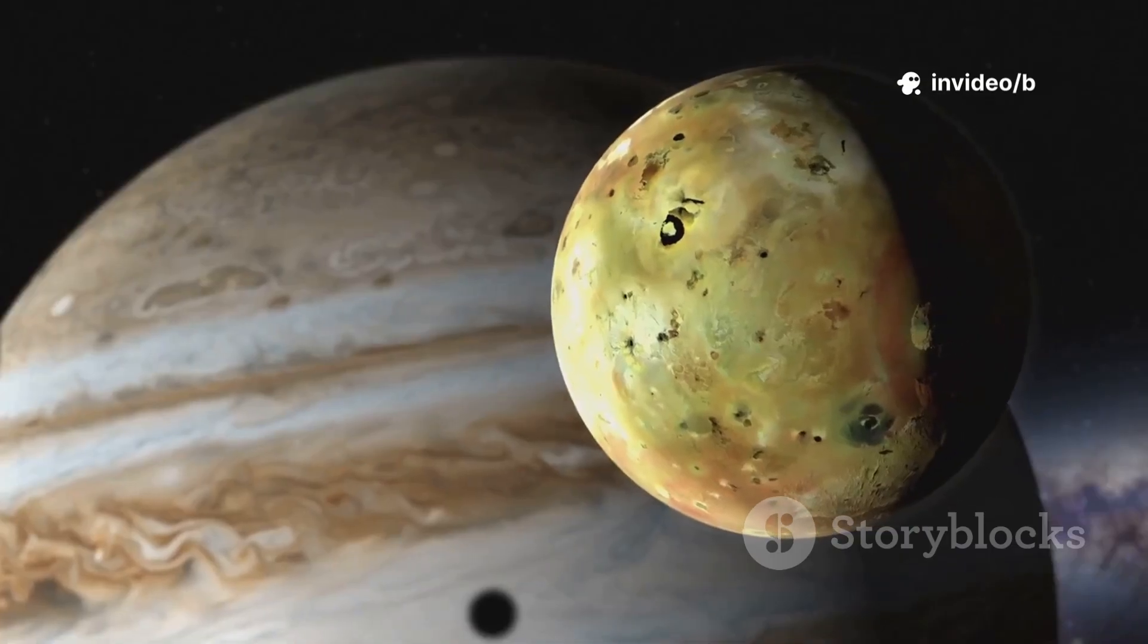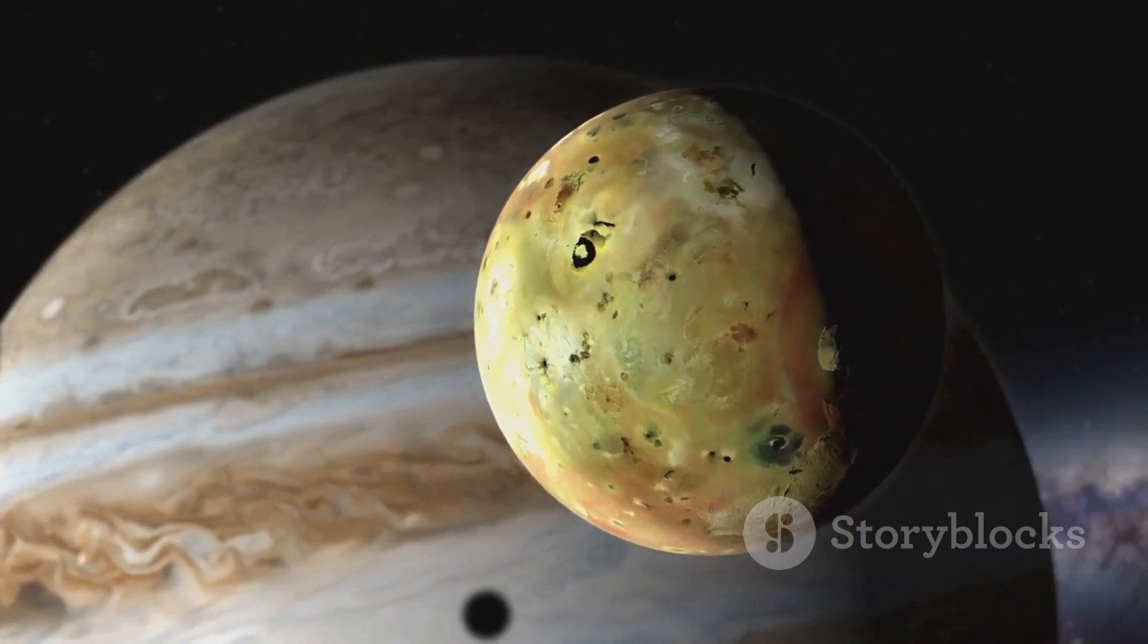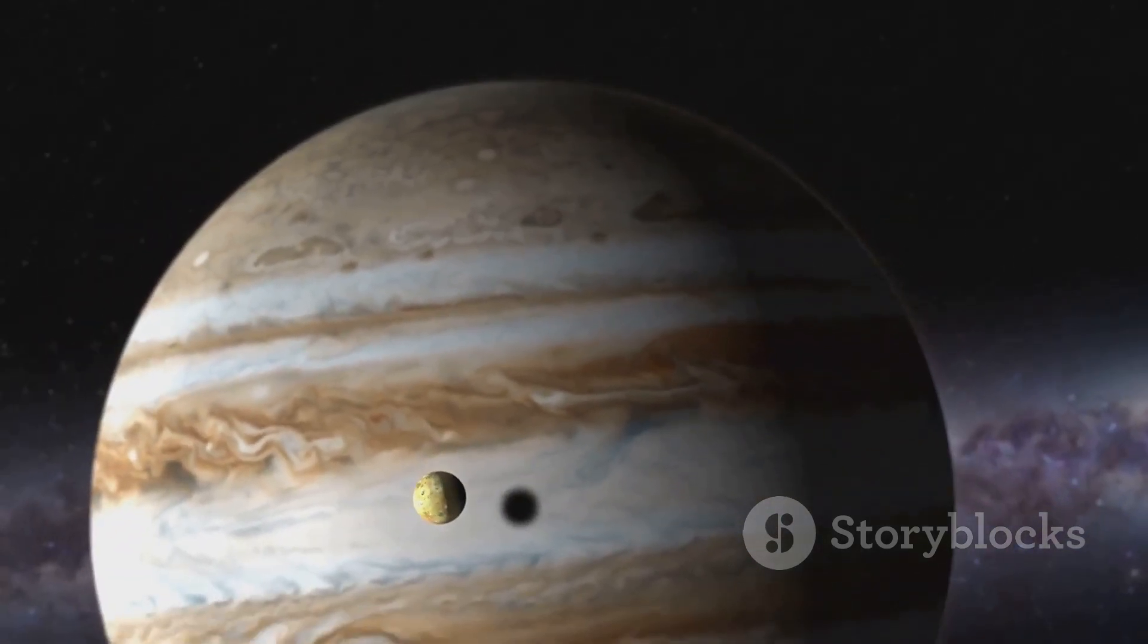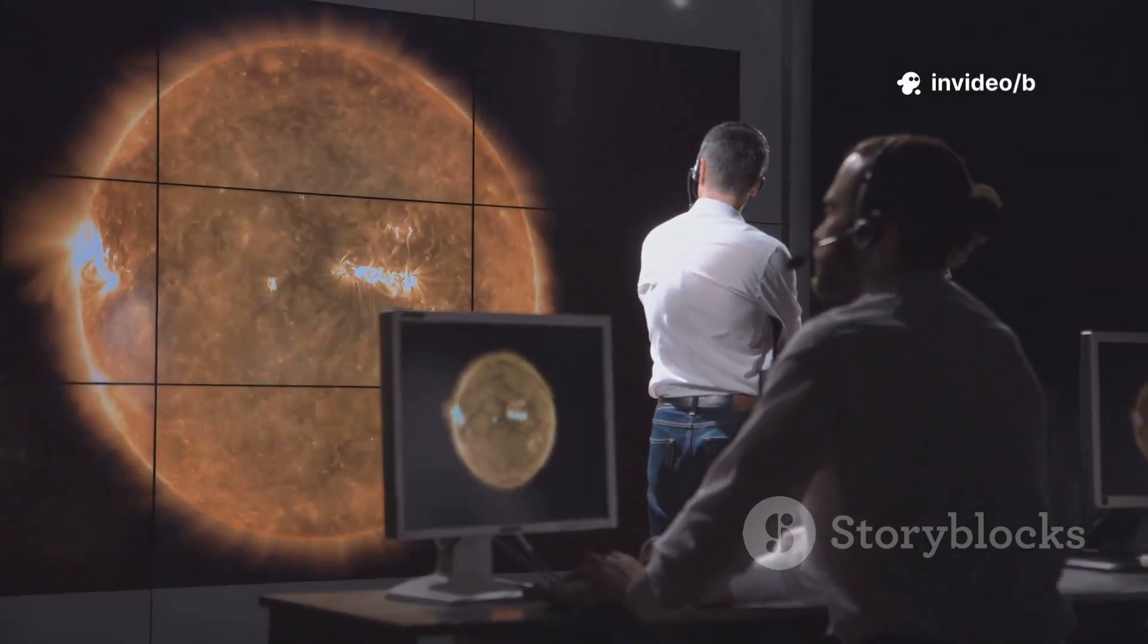At Jupiter, it revealed volcanic moons and swirling storms. At Saturn, it uncovered the true nature of the rings and discovered new moons. Each encounter rewrote the story of our solar system.